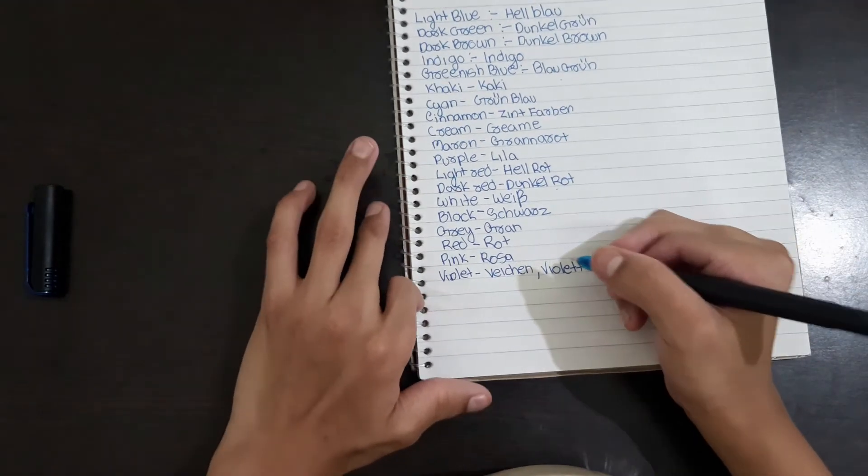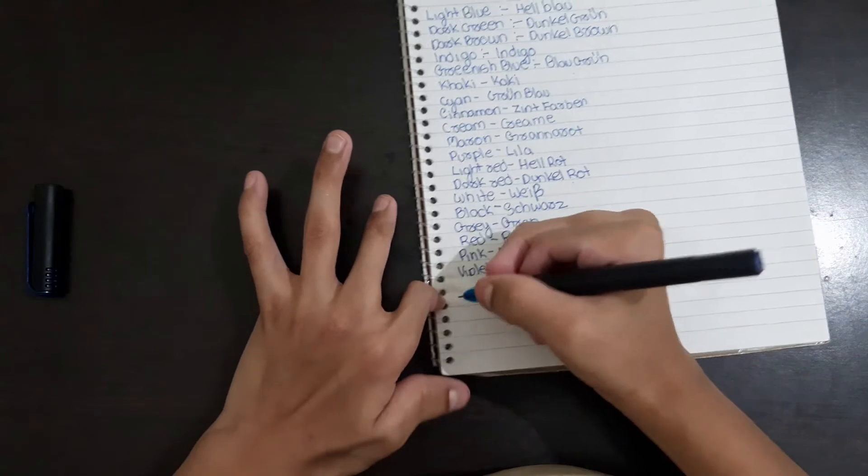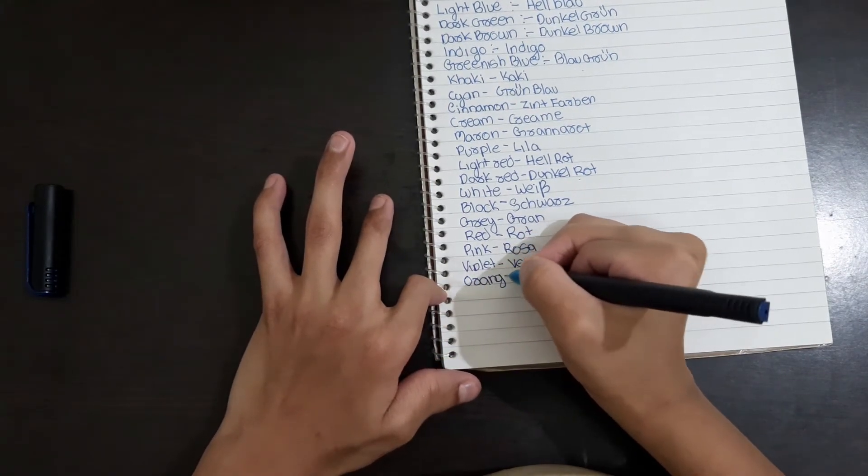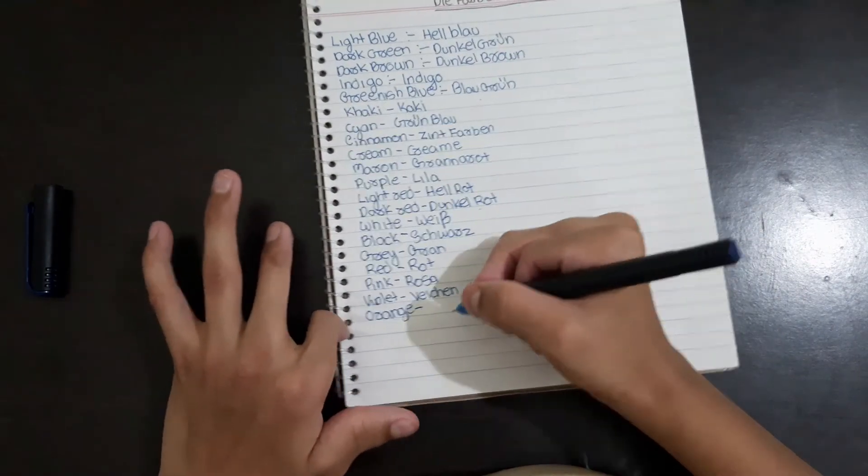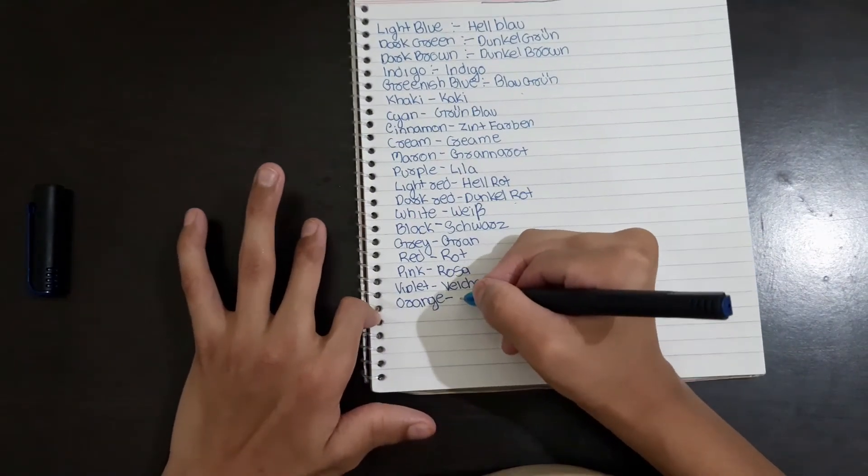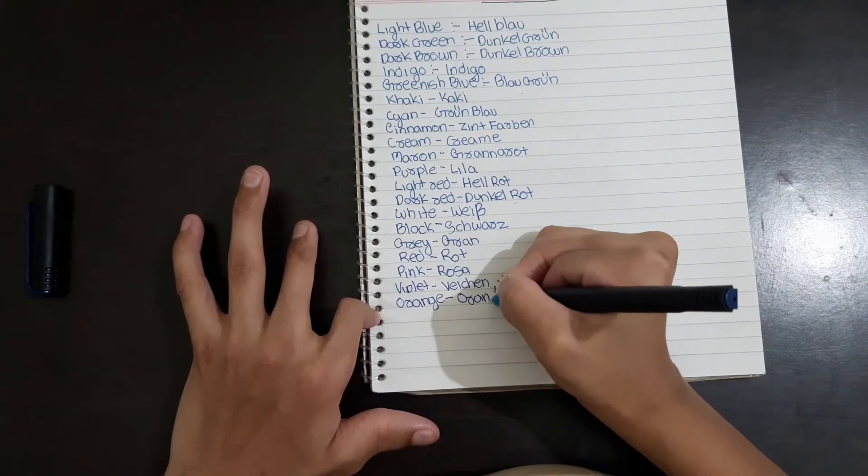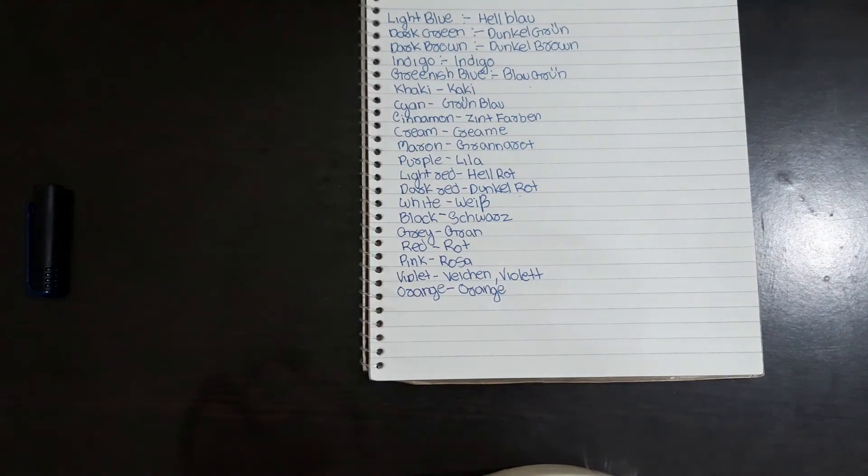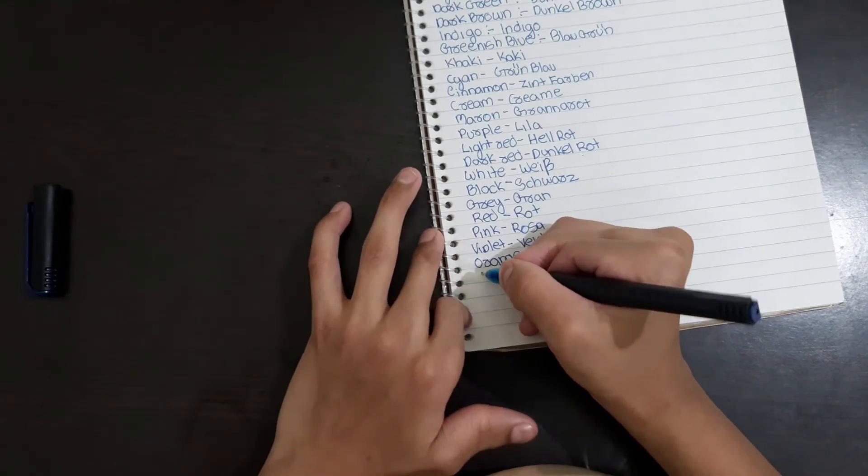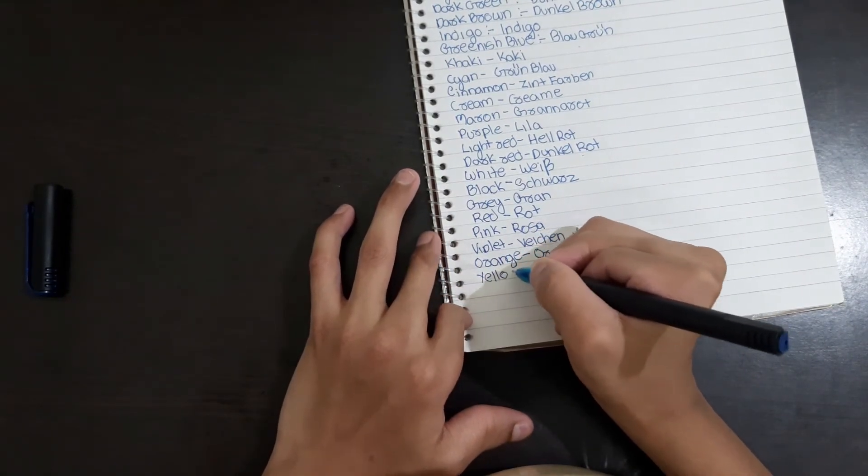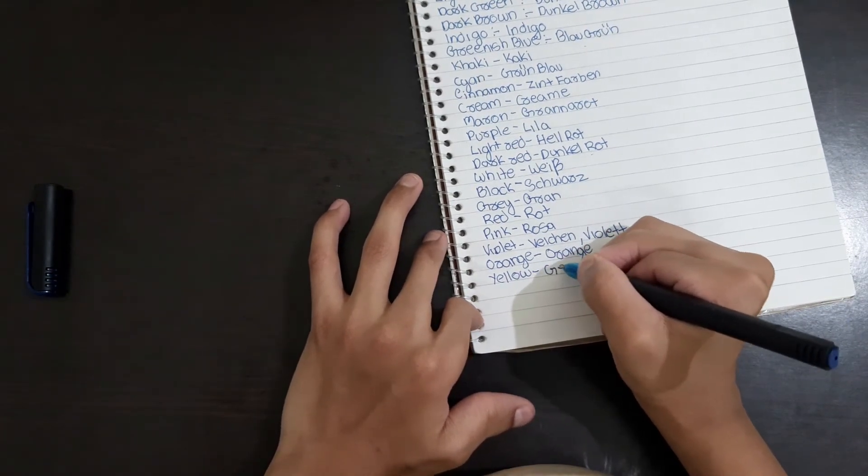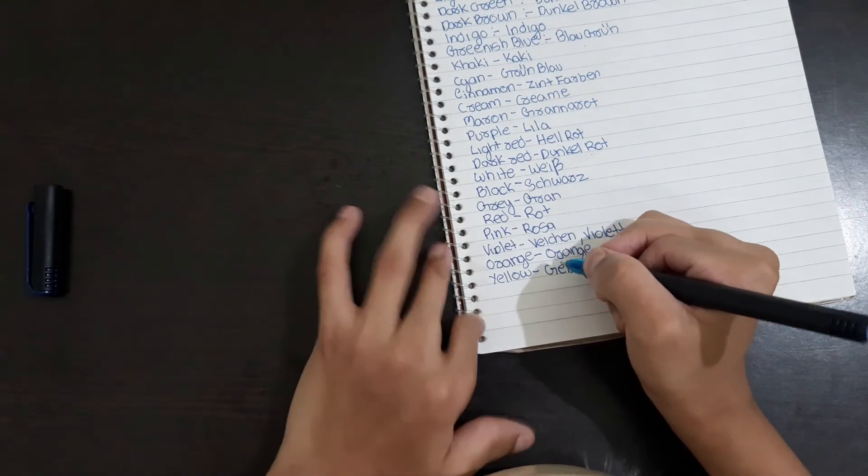Orange is orange only. Now yellow. Yellow is Gelb, G-E-L-B.